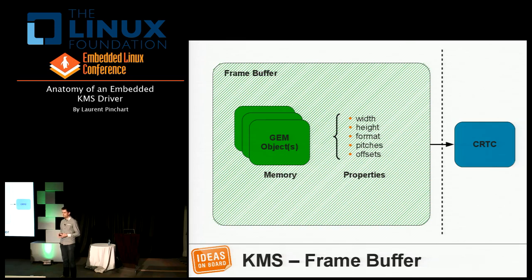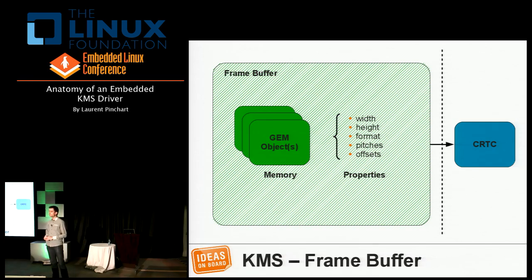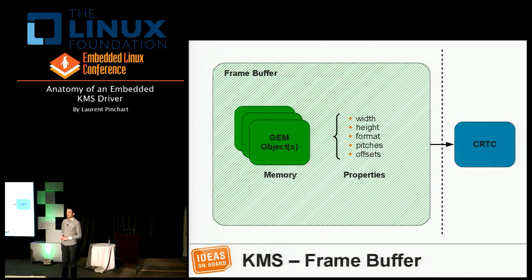The pixel format is something like RGB 16-bit 5-6-5 — it's a format identifier in the API. These memory objects are shown as GEM objects. GEM stands for Graphical Execution Manager, but nowadays in the embedded world we use GEM as a memory manager with no relationship to graphics execution. When talking about GEM objects, that's a memory object handled by the KMS and DRM APIs.